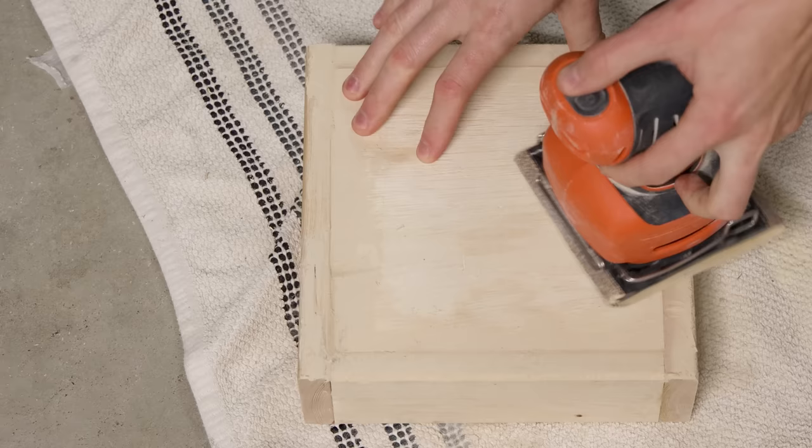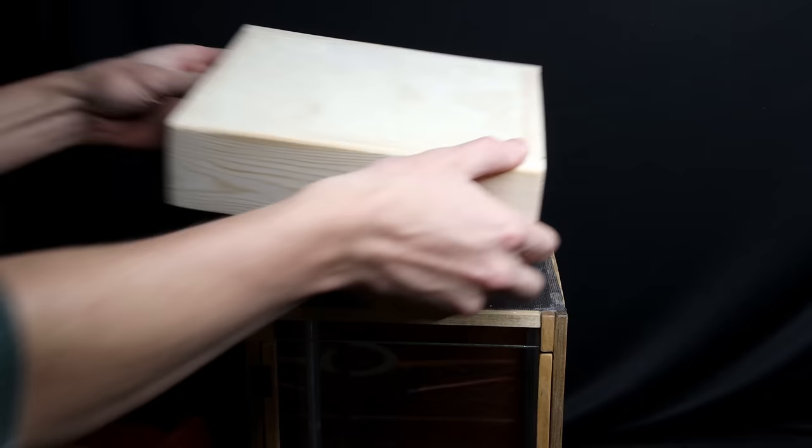I also added wood putty to the top to account for inconsistencies. Once everything dried, I went back and sanded it. Here's how it looks on top of the tank. I like how it turned out a lot.